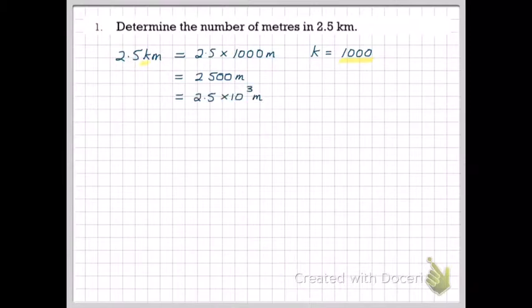We can change that to scientific notation. Scientific notation always has one non-zero digit before the decimal point. And to achieve that we would need to move the decimal point three places to the left, which is the same as multiplying by 10 to the power of 3. So that's our answer: 2.5 times 10 to the power of 3.